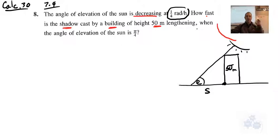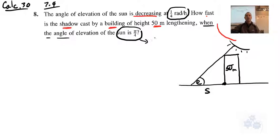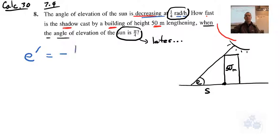With these questions they're also going to give you a specific point — it's very important — a point during this whole process where they want you to find the instantaneous rate. They'll give you some point in this process where they want you to find the second instantaneous rate, and that is when the angle of elevation of the sun is pi over four. Don't do anything with that until later. Write down your information: the angle of the sun is decreasing at negative one quarter radians per hour — that's the rate of change of e. Negative means decreasing, positive means increasing.